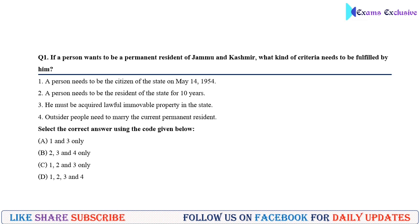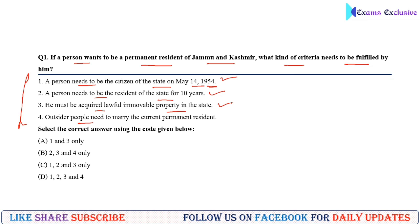Question number one: If a person wants to be a permanent resident of Jammu and Kashmir (J&K), what criteria need to be fulfilled? There are four statements. First, a person needs to be a citizen of the state on May 14th, 1954 — correct. Second, a person needs to be a resident of the state for 10 years — correct. Third, he must have acquired lawful immovable property in the state — correct. Fourth, an outsider needs to marry a current permanent resident — this is wrong. So the answer is 1, 2, and 3 only, making option C correct.